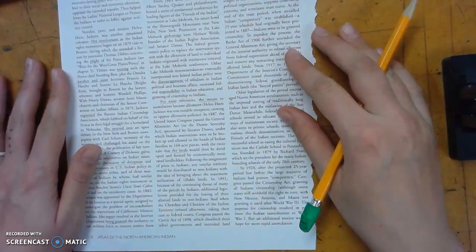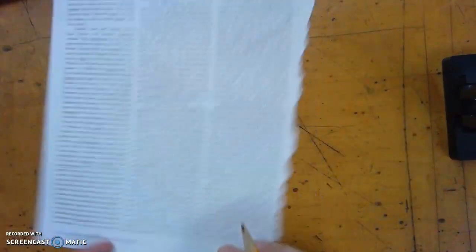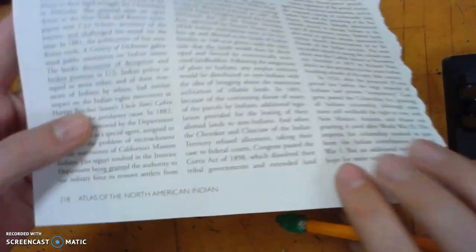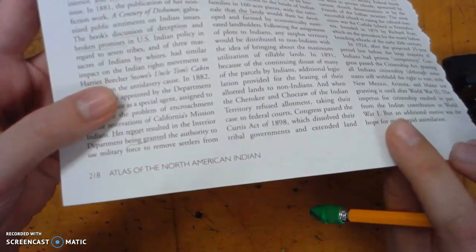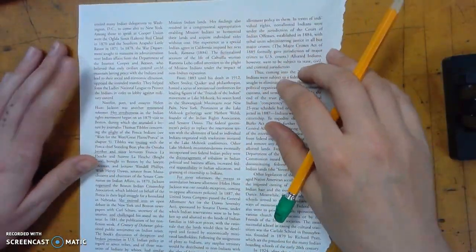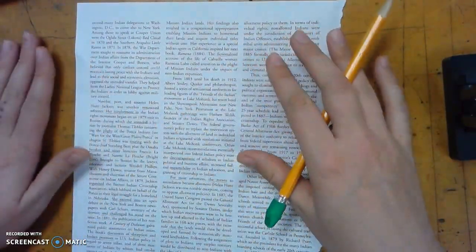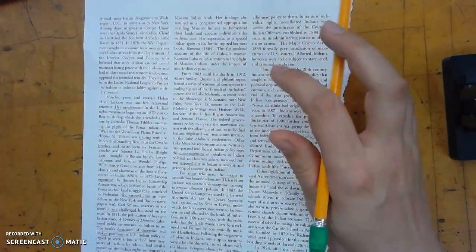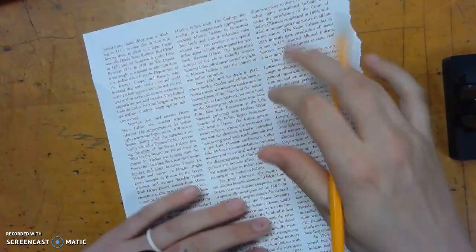So here I have a page. This is about North American Indians or Native Americans and their history. I've got a pencil. What I want to do is find words on this page that go with who I am. I'm going to use my pencil to circle them. So let's get started.